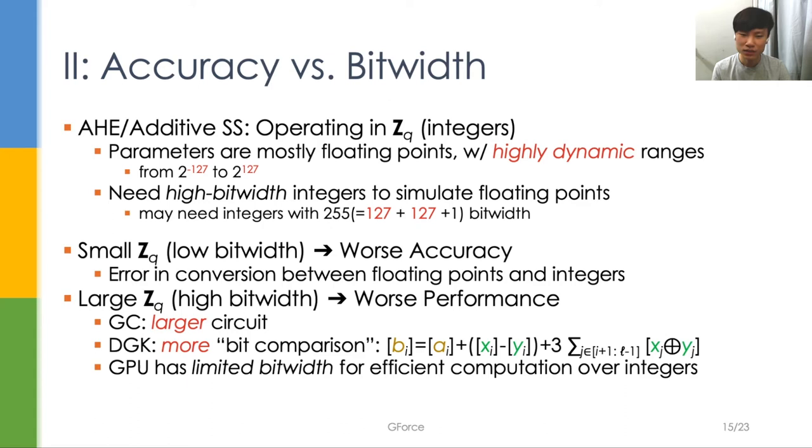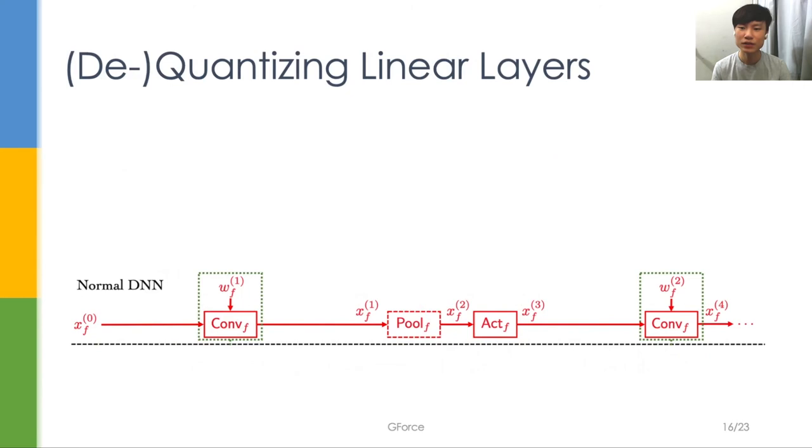In DGK protocol, the number of bit comparison steps goes linearly with the bitwidth. The problem gets worse when using GPU because GPU can only handle integers efficiently with limited bitwidth. Our solution is to quantize the neural network to ensure that all values in linear layers, including inputs, weights, outputs, are low bitwidth integers, while neural network accuracy is as good as using floating points.